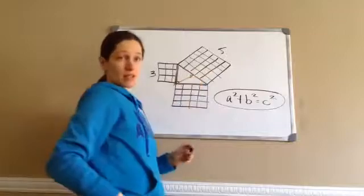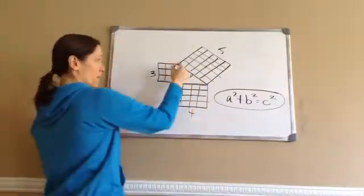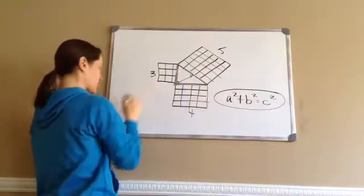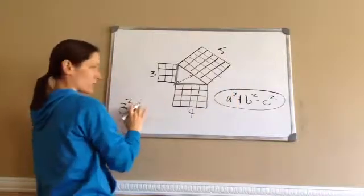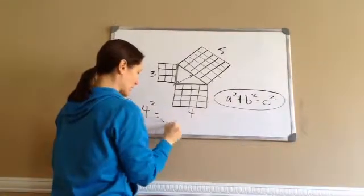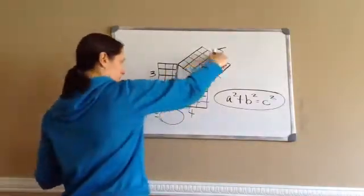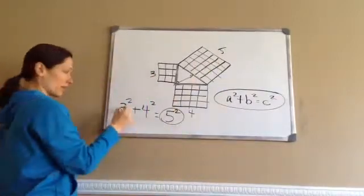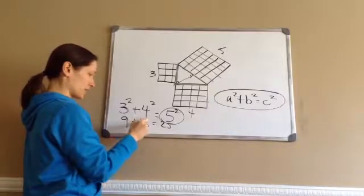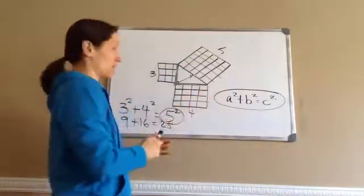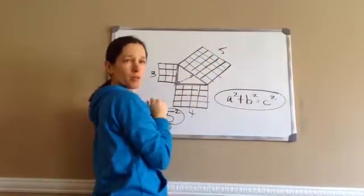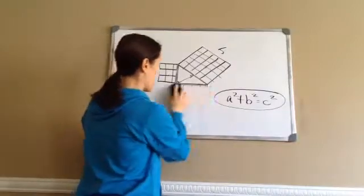Let me show you this using the numbers 3, 4, and 5. This side is a — I could have chosen either leg as a or b, it doesn't matter. So a is 3, a squared would be 3 squared; plus b is 4, 4 squared; equals c squared. 3 times 3 is 9, 4 times 4 is 16, 5 squared is 25. And 9 plus 16 is 25 — yes! That's his theorem.